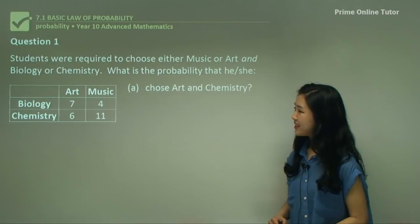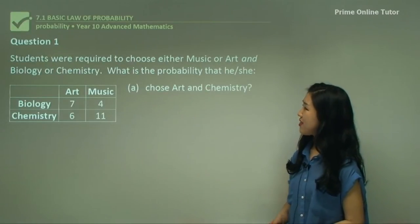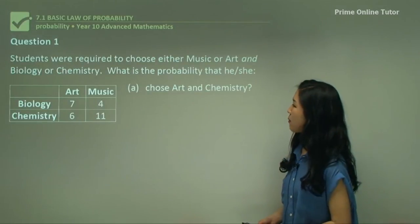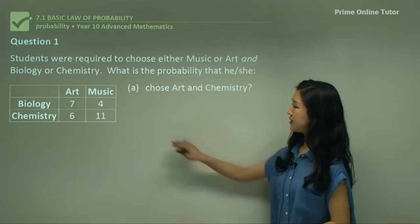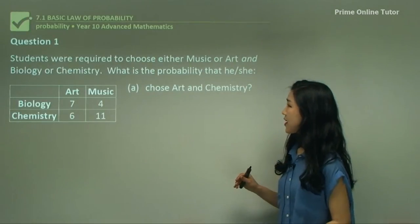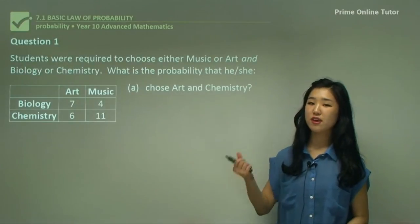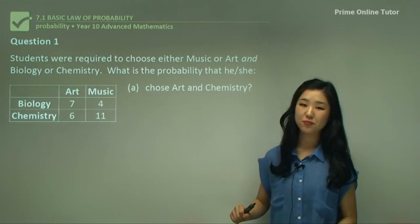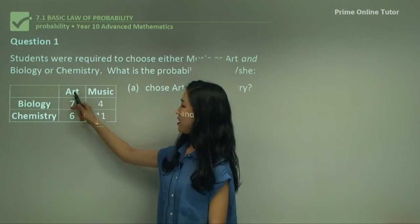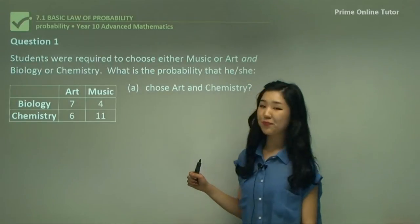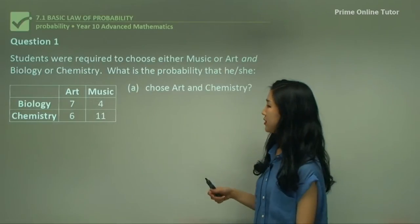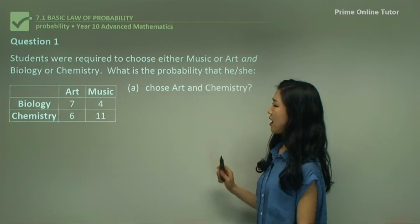Starting with question one: students were required to choose either music or art, and biology or chemistry. So what is the probability that he or she chooses art and chemistry? These students can choose music or art and they also have to choose chemistry or biology. Here are the science subjects biology and chemistry, and here is art and music. So they can choose two subjects.